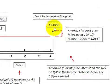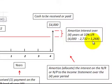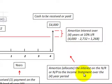Now we can calculate the interest we have to amortize over that four-year period. We take the future value of $4,000 minus the present value of $2,732, giving us $1,268 worth of interest to amortize. We have to allocate this interest for the note receivable or note payable on the income statement over the four-year period.